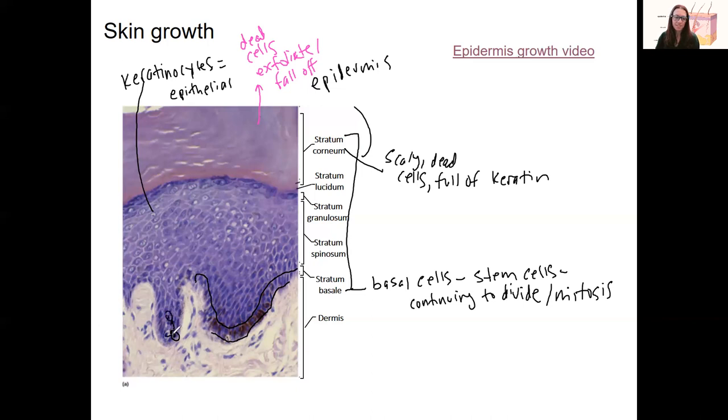At least one of those cells, one cell becomes two, it's going to push up into the next layer. What is that next layer? The stratum spinosum. So this contains young cells that just divided from the stratum basale.